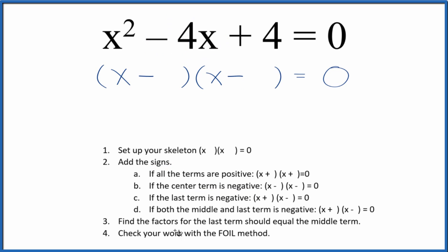Now what we want to do is find the factors for the last term, that's this positive 4, that should add up to equal the middle term. So 1 times 4, that doesn't add up to the middle term. 2 times 2, though, that could work. 2 times 2 is 4, 2 plus 2 is 4. So we'll put a 2 here and a 2 here, and we've factored this equation.